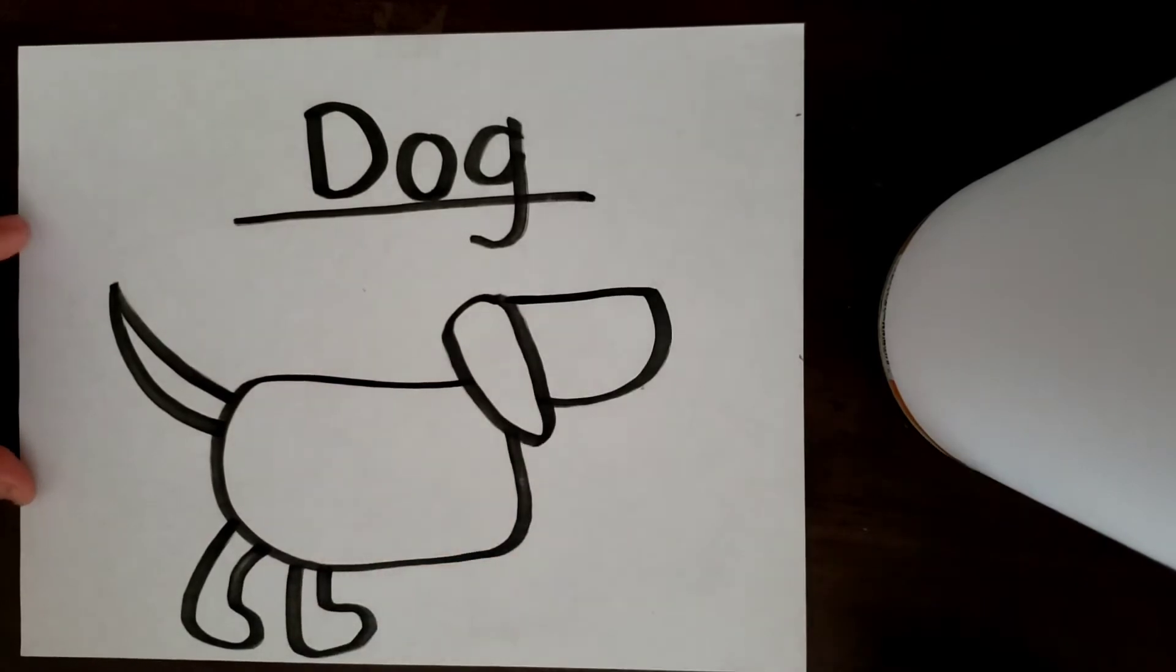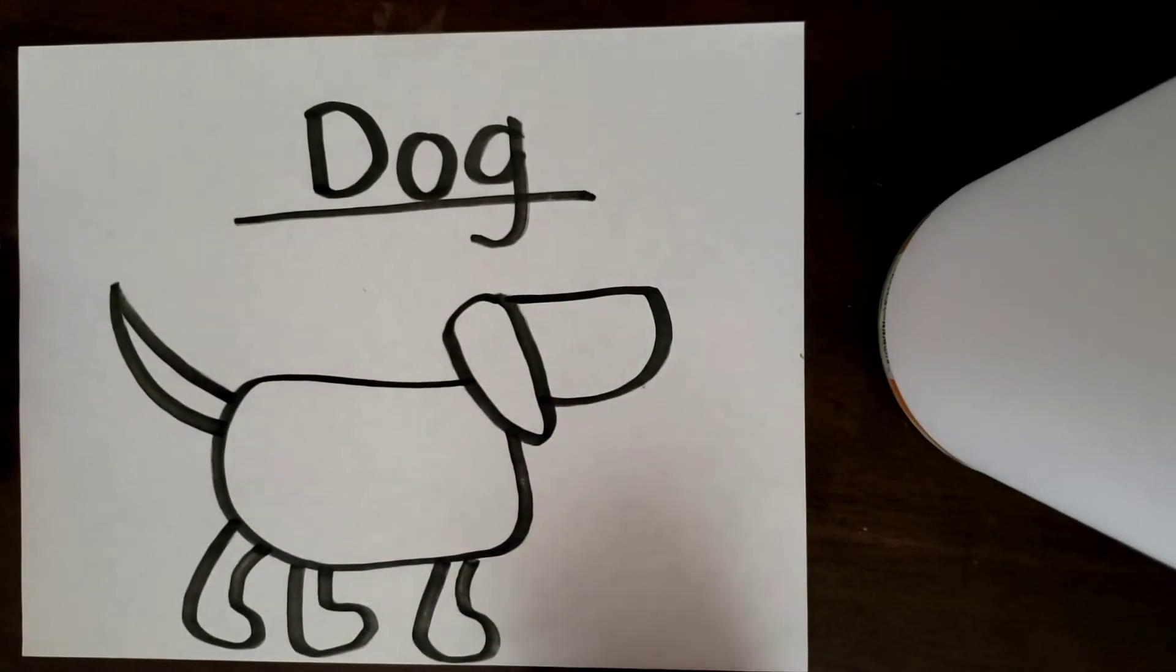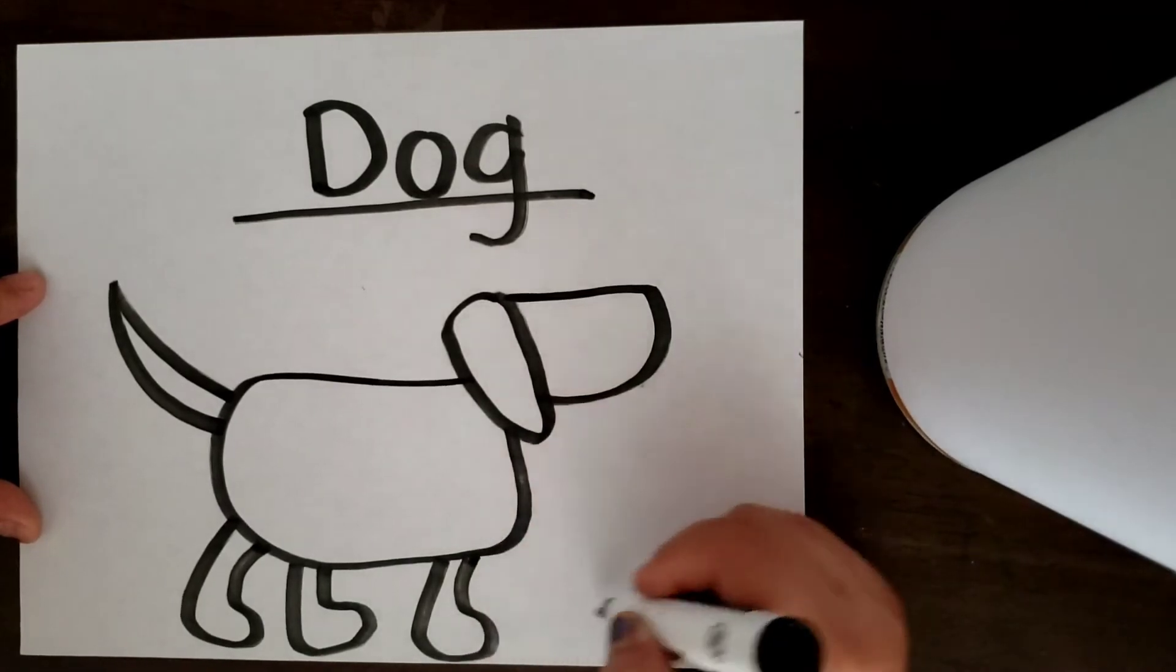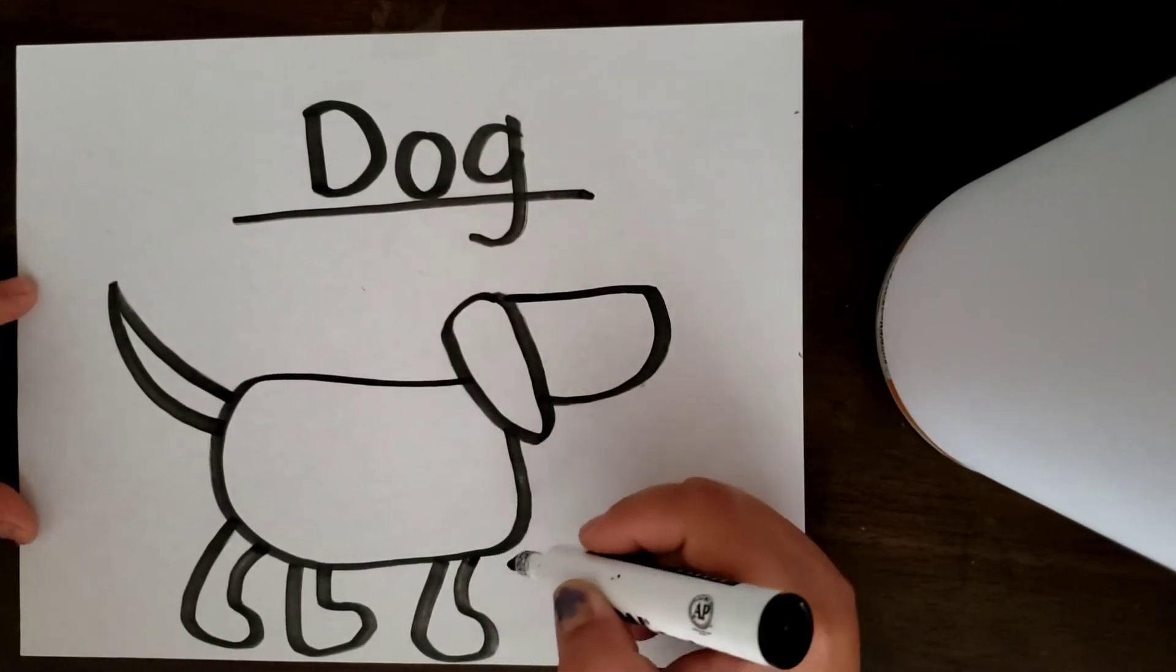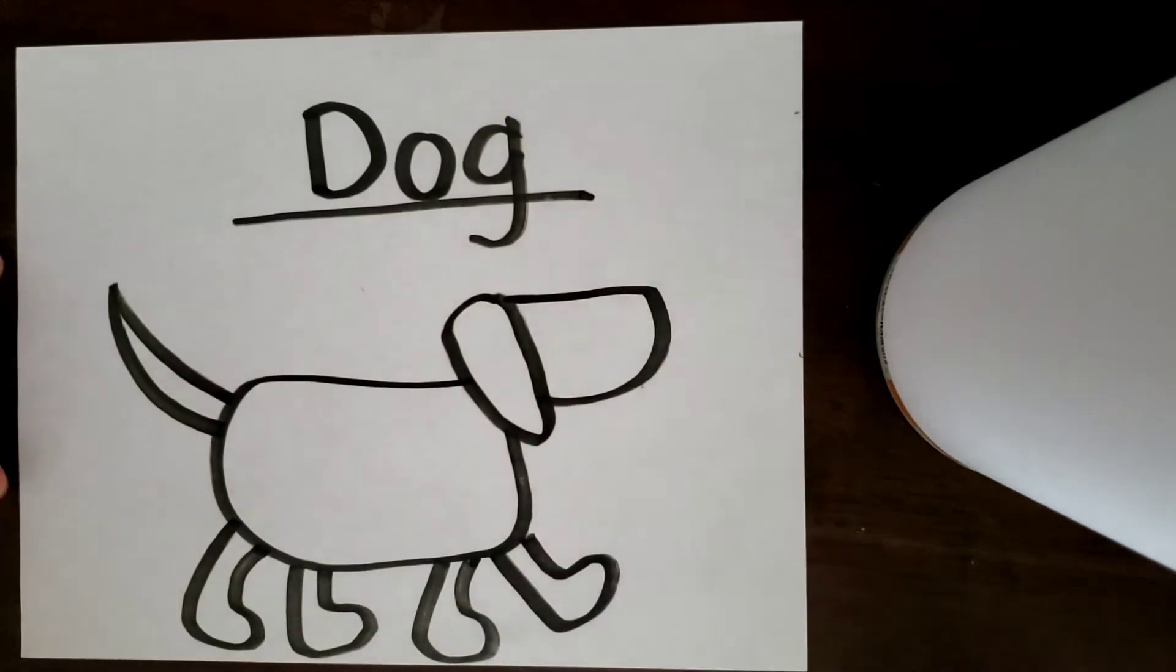One, two, three. I'm kind of making them a little sideways so it looks like he's walking. And then this last one I'll put up so it looks like he's taking a step. Ready? Four.